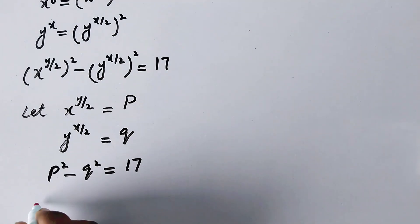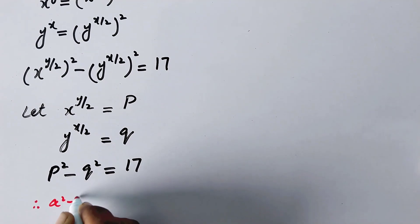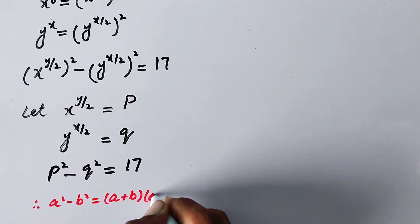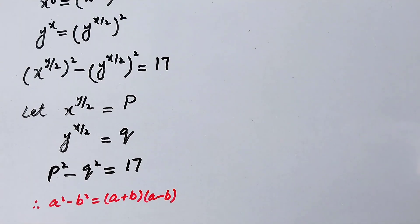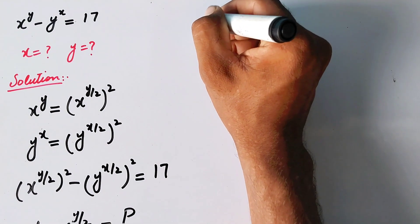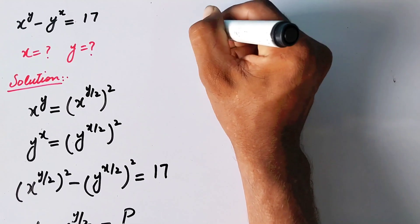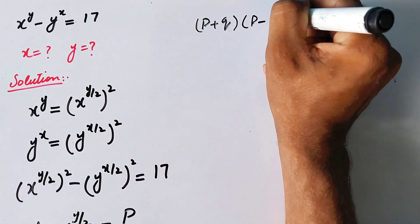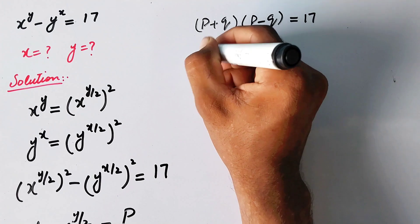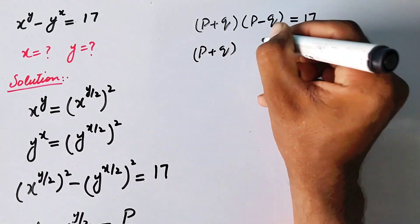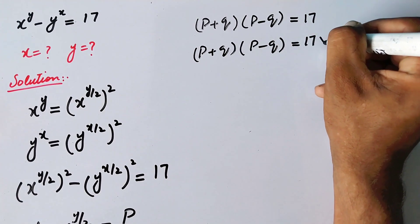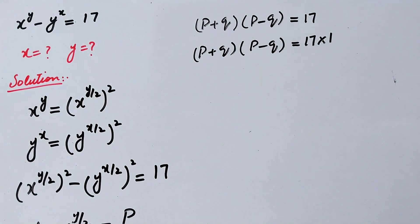Since A² minus B² equals (A+B)(A−B), we can write (P+Q)(P−Q) = 17. We can also express this as (P+Q)(P−Q) = 17 multiplied by 1, giving us two factor pairs on both sides.